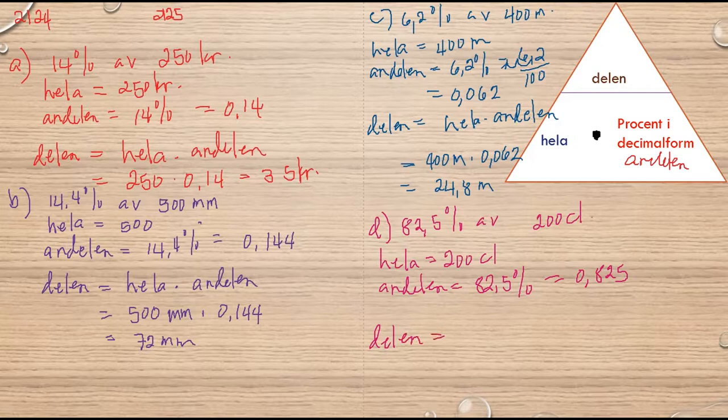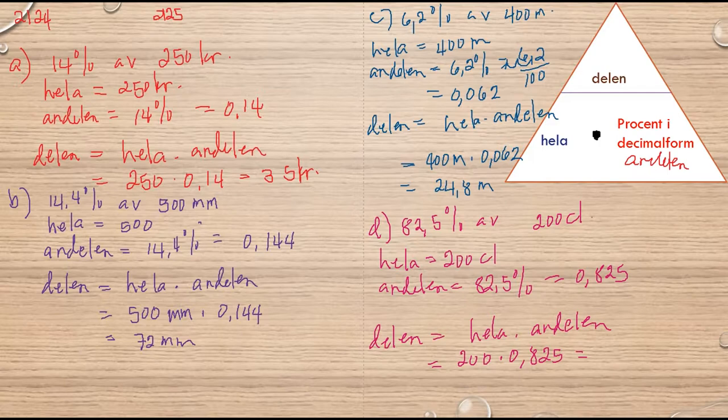Delen är lika med hela multiplisar med andelen i decimalform. Hela är 200 multiplisar med 0.825. Så får vi 165 centiliter.